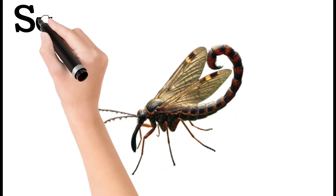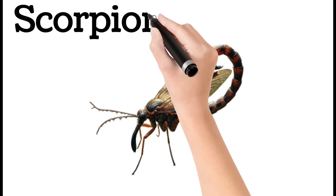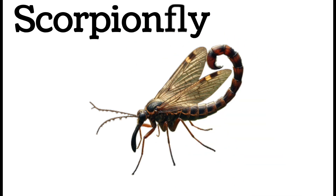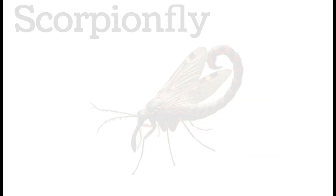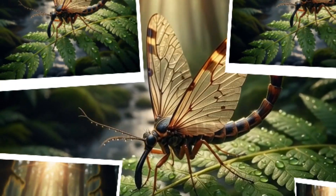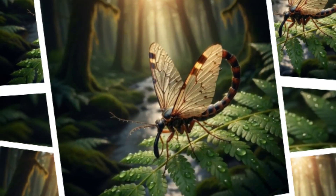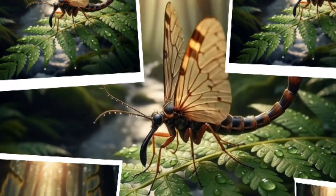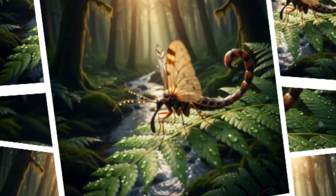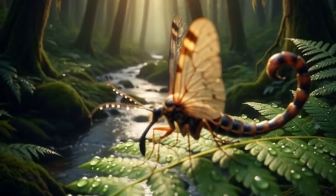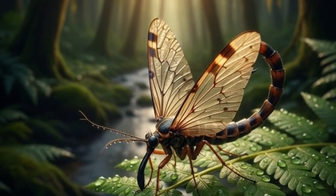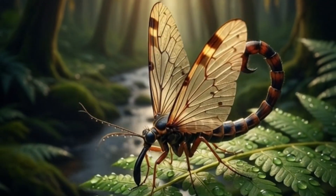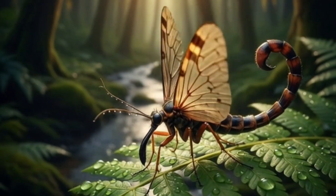Next, scorpion fly: has a tail that looks like a scorpion. Harmless to humans. Feeds on dead insects. Found in forests. Has a long beak-like mouth.